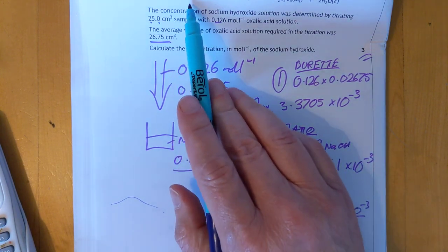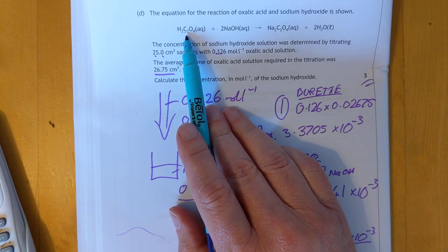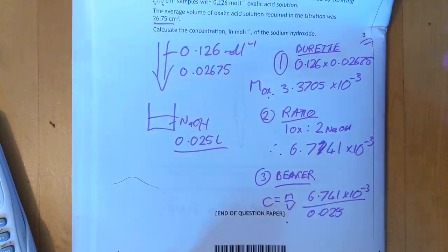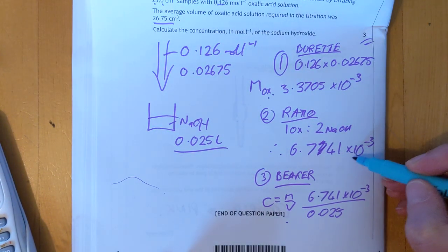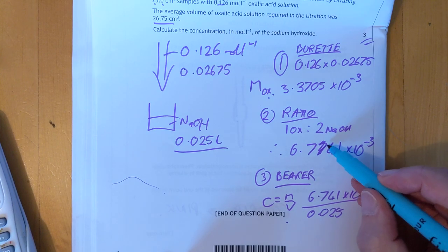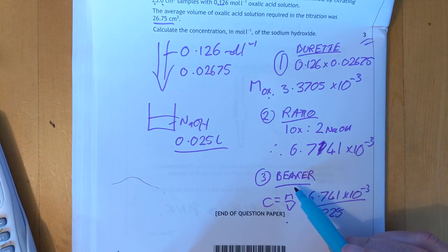Step two. Ratio. Ratio is here. One oxalic acid reacts with two sodium hydroxide. So therefore that number there, we need to double it to create this number here. Sorry about the typo.